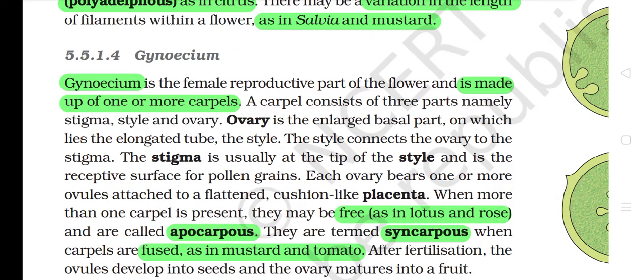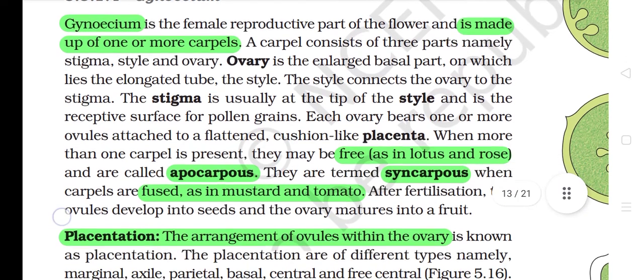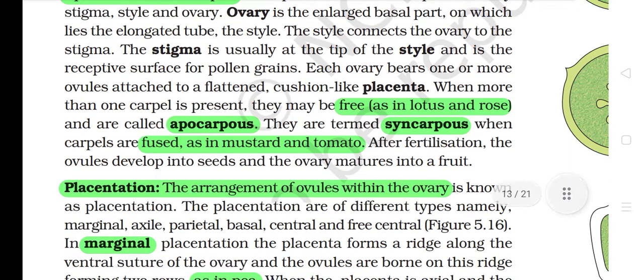5.5.1.4 Gynoecium. Gynoecium is the female reproductive part of the flower and is made up of one or more carpels. A carpel consists of three parts: stigma, style and ovary. The ovary is the enlarged basal part on which lies the elongated tube, the style. The style connects the ovary to the stigma. The stigma is usually at the tip of the style and is the receptive surface for pollen grains. Each ovary bears one or more ovules attached to a flattened cushion-like placenta. When more than one carpel is present, they may be free as in lotus and rose, and are called apocarpous. They are termed syncarpous when carpels are fused, as in mustard and tomato. After fertilization, the ovules develop into seeds and the ovary matures into a fruit.